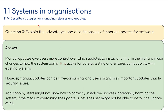Question three — advantages and disadvantages of manual updates. Manual updates give users more control over which updates to install and inform them of any major changes to how the system works. This allows for careful testing and ensures compatibility with existing systems. However, manual updates can be time-consuming, and users might miss important updates that fix security issues. Additionally, users might not know how to correctly install the updates, potentially harming the system. If the medium containing the update is lost, such as a USB flash drive, the user might not be able to install the update at all and may have to buy a copy of the latest release.